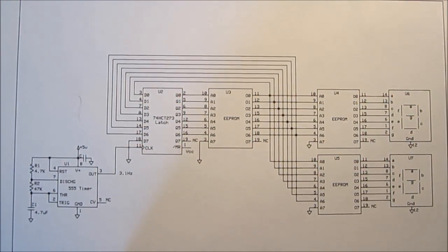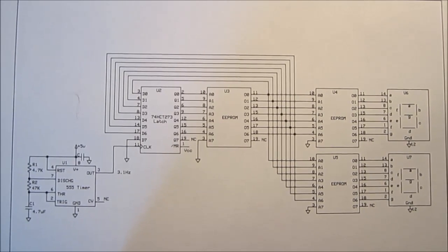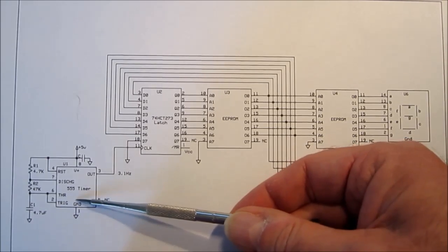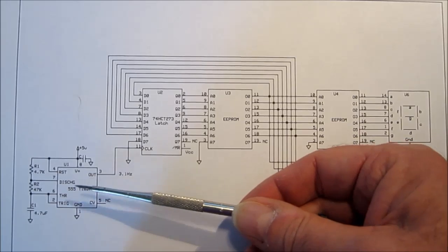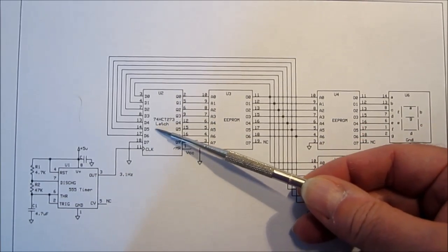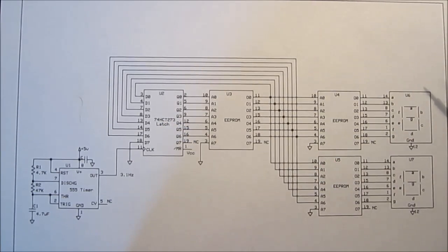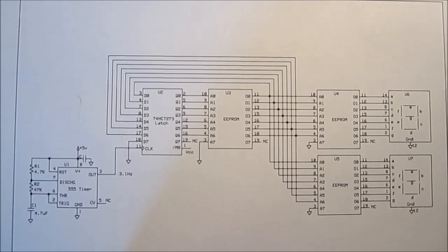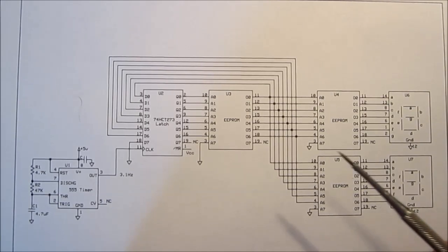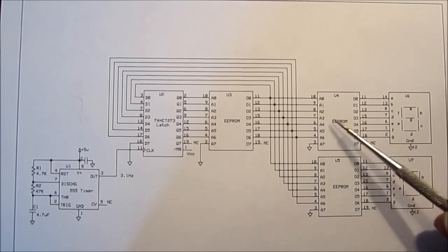Here's the schematic and I'll be glad to send it to you if you email me at the address shown at the end. Essentially we have our timer here, which is our 555 chip producing 3.1 Hz, going into our latch. This is a 74HC or HCT 273 — it's 8D flip-flops, an octal D flip-flop chip. Here I've just notated these as EEPROM, just kind of generic.